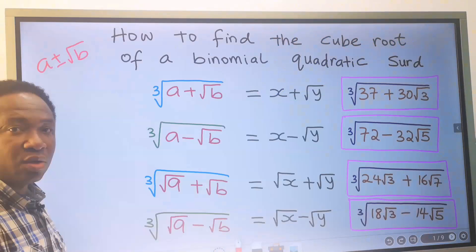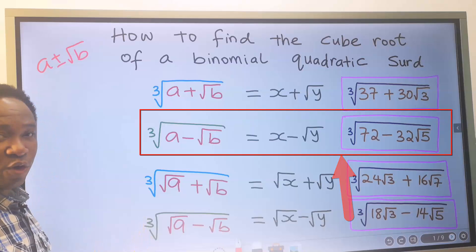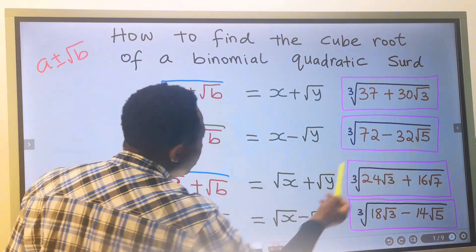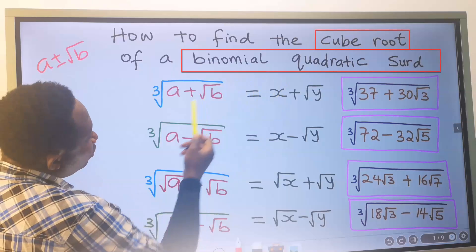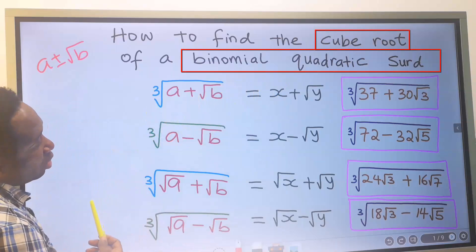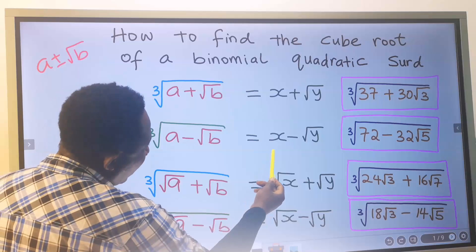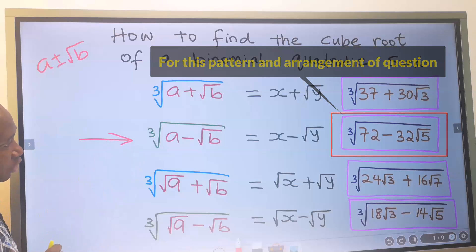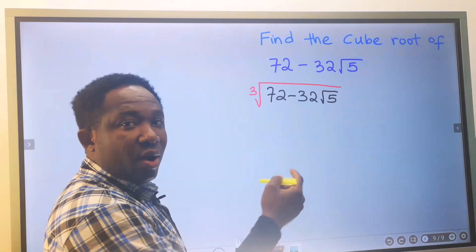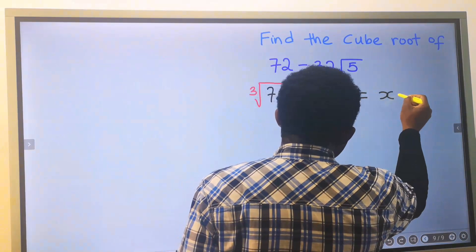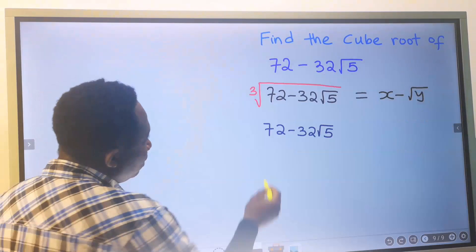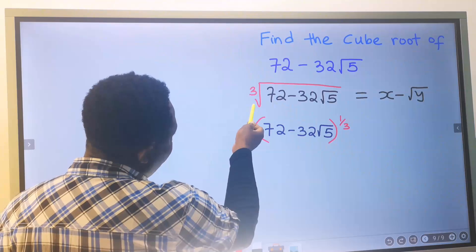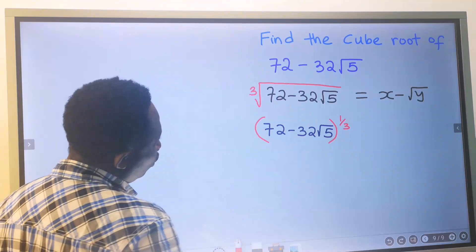Step number 2: consider the representation of your answer. 72 has no square root, but 32 has the square root of 5. For the cube root of a binomial quadratic surd, our answer will be x minus the square root of y. That means our answer here will become x minus the square root of y, and this is the same as to the power of 1 over 3, which is the cube root.